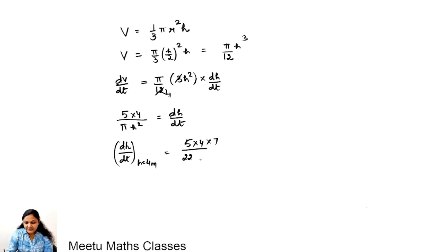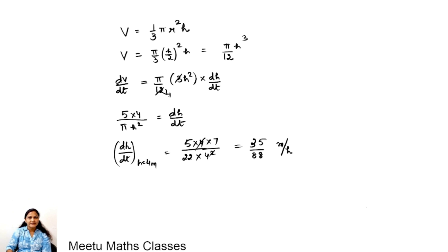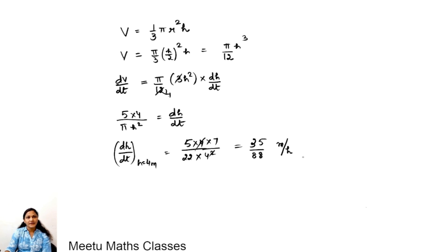Using π = 22/7 and h = 4, this gives dh/dt = 5 × 4/(22/7 × 16) = 35/88. The unit is meter per hour. Therefore, the level of water is rising at the rate of 35/88 meters per hour.